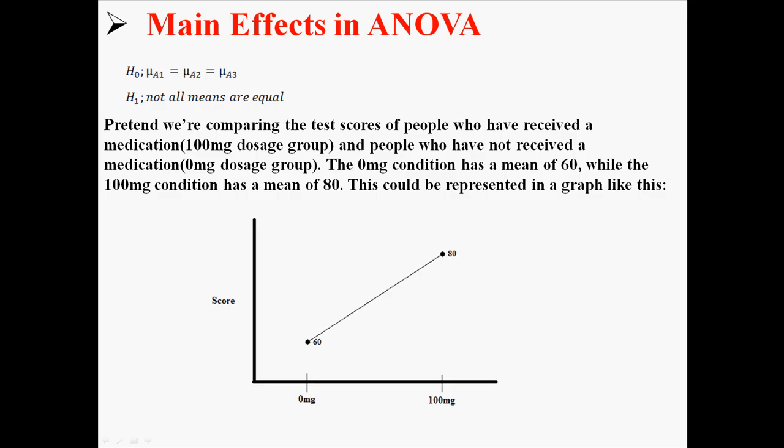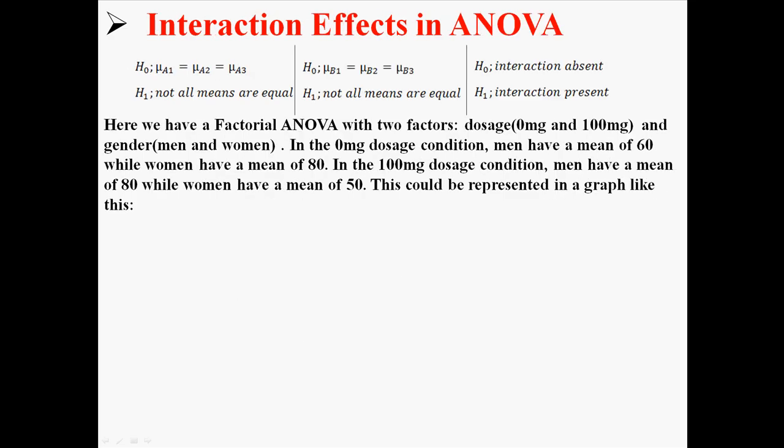The first group has a mean of 60, and the second group has a mean of 80. This is how you could draw it in a graph. And I'm doing it like this because it's a more meaningful way of showing an interaction in ANOVA.